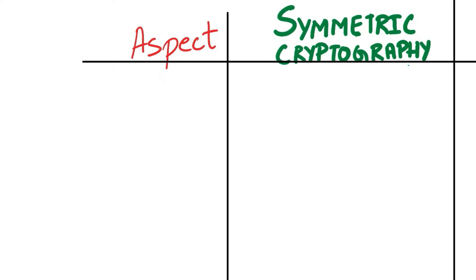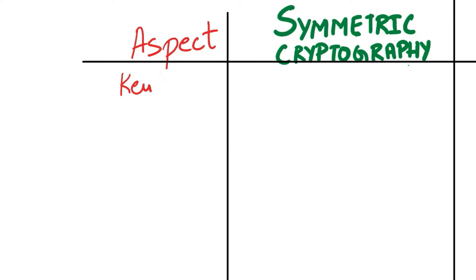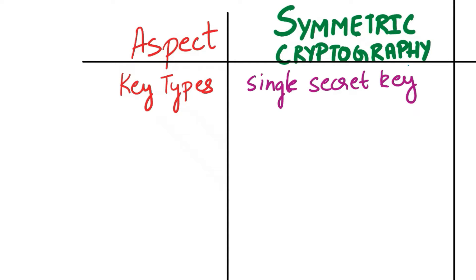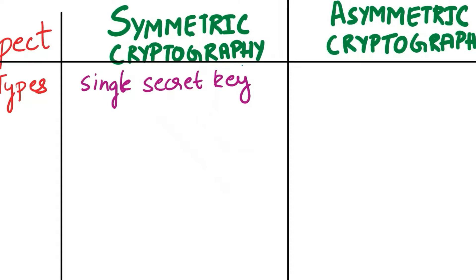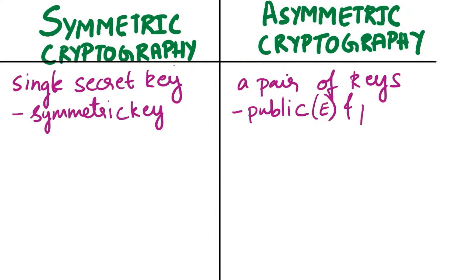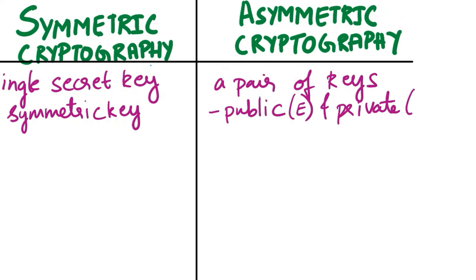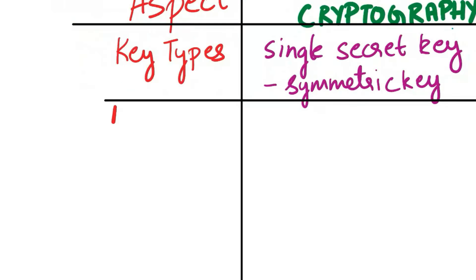The first aspect of comparison is key types. Symmetric cryptography utilizes a single secret key, known as the symmetric key, for both encryption and decryption. Asymmetric cryptography relies on a pair of keys: a public key for encryption and a private key for decryption and digital signatures.